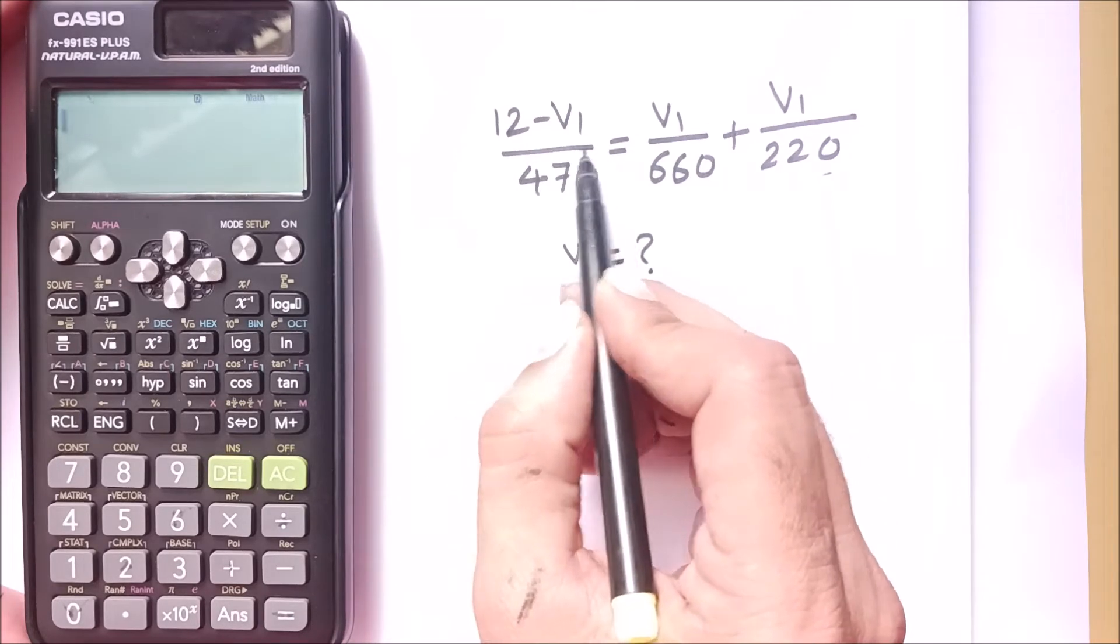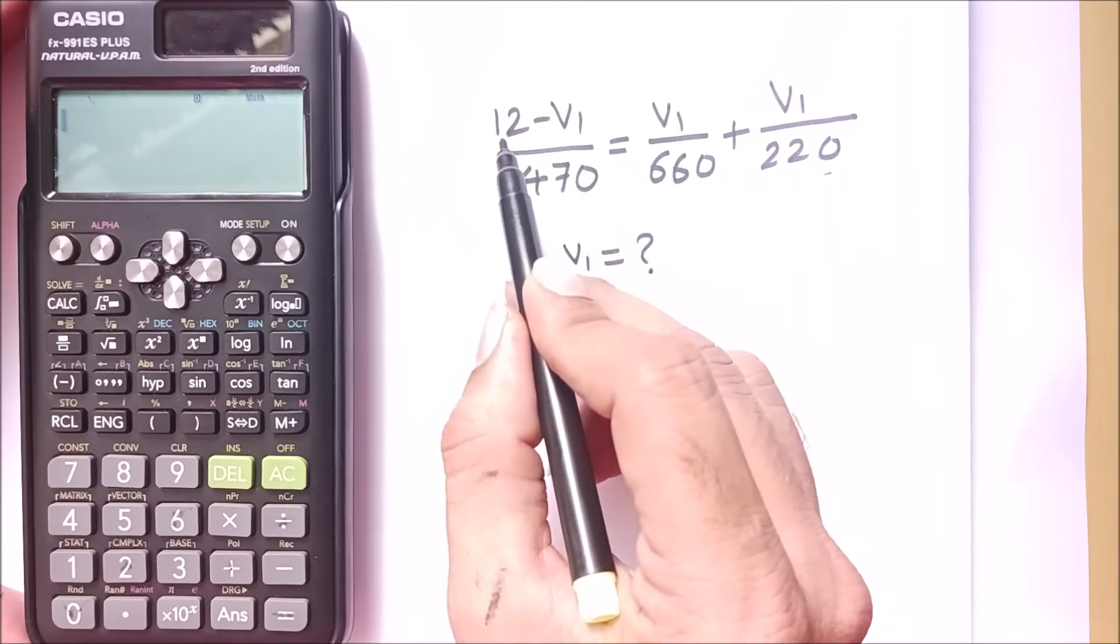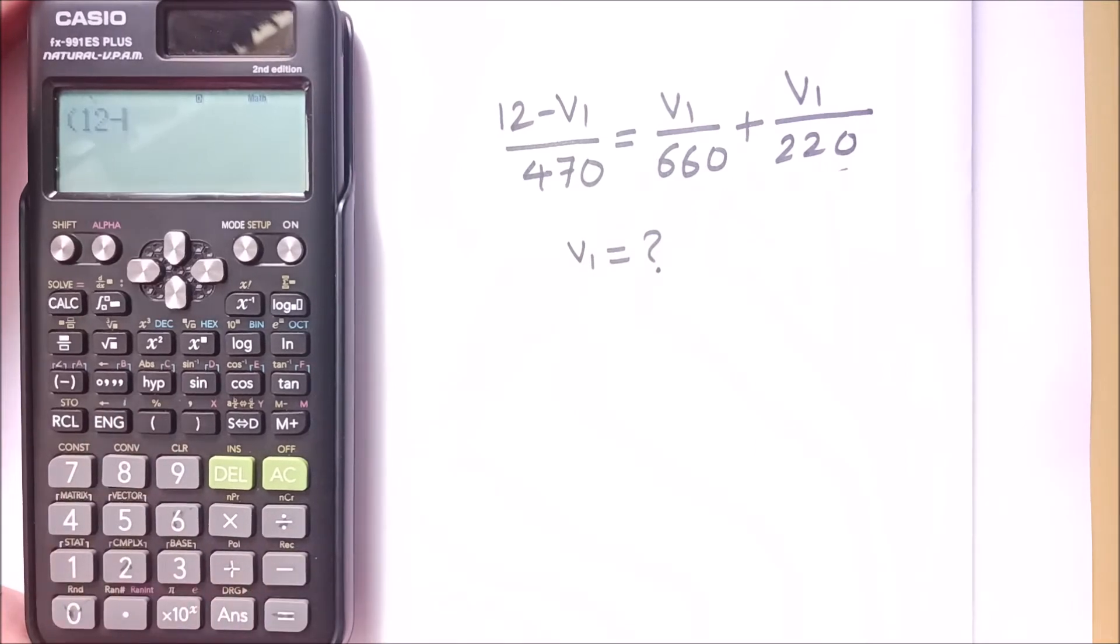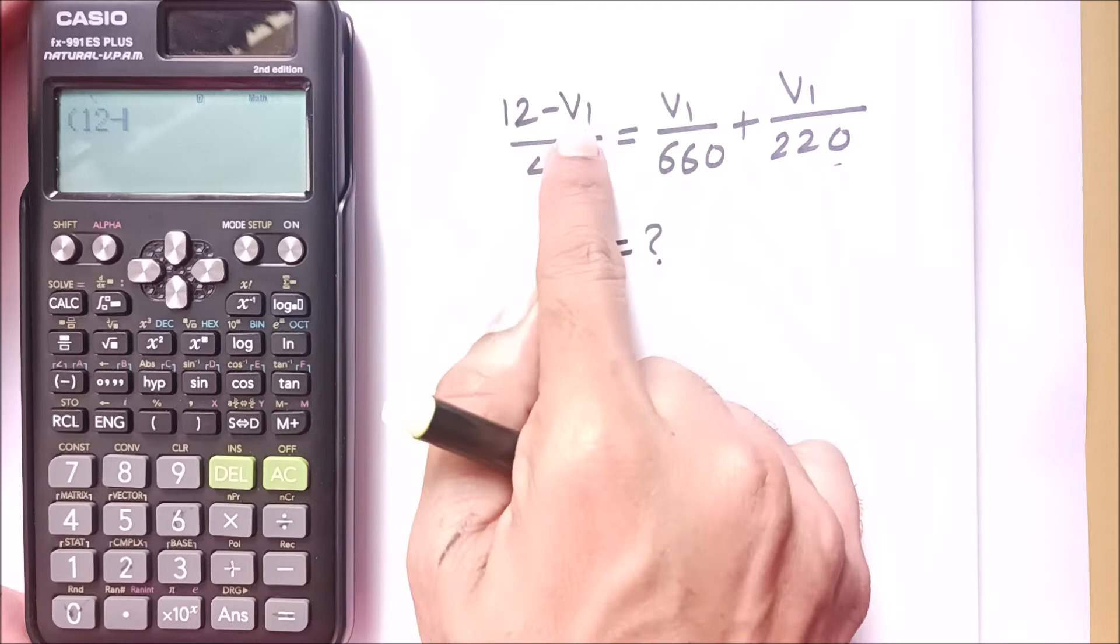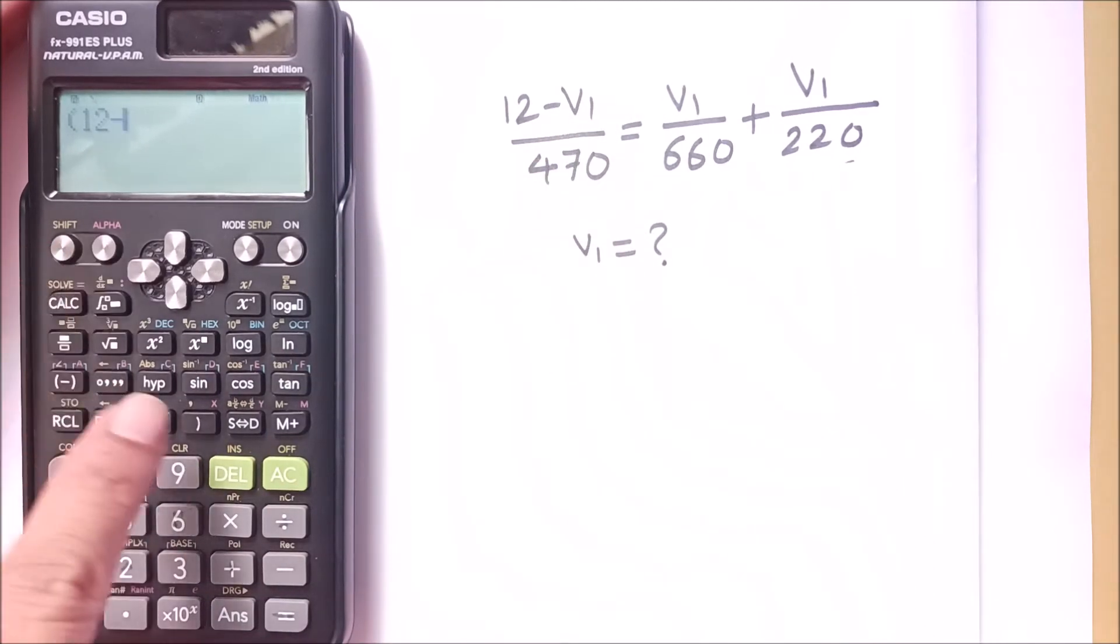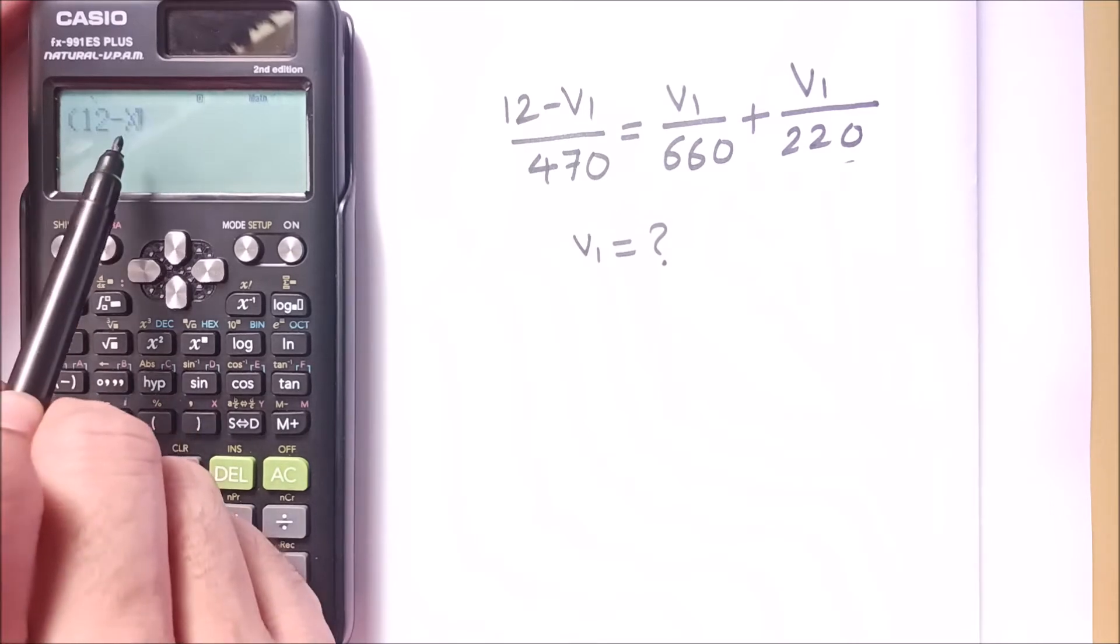On the left-hand side of the equals sign, the numerator is 12 minus V1. I will put brackets and write 12 minus V1, but in the calculator, instead of V1 or the unknown, I have to put alpha round bracket, which will show X.